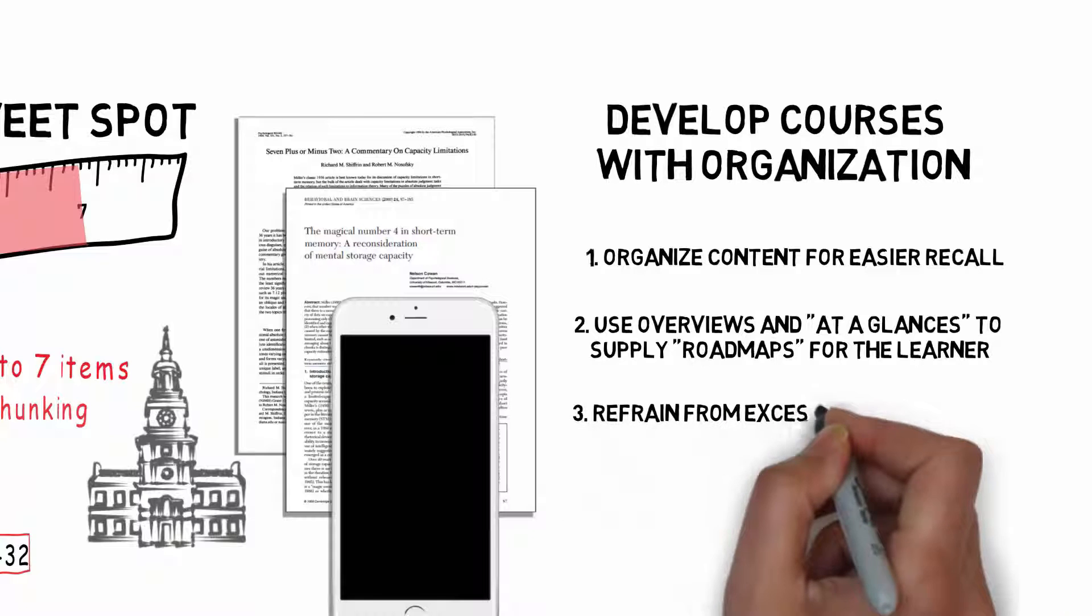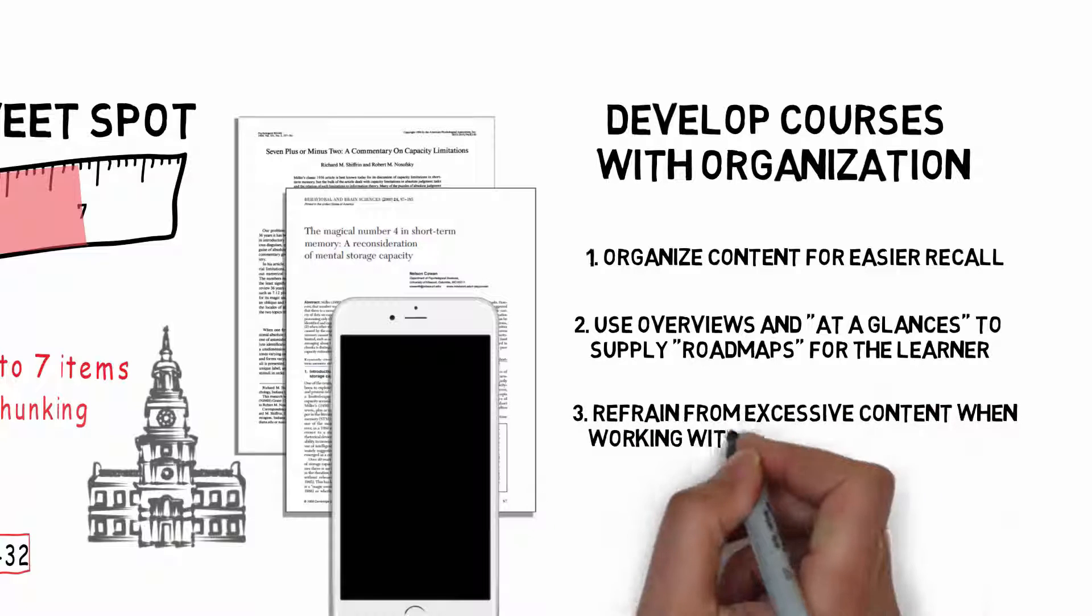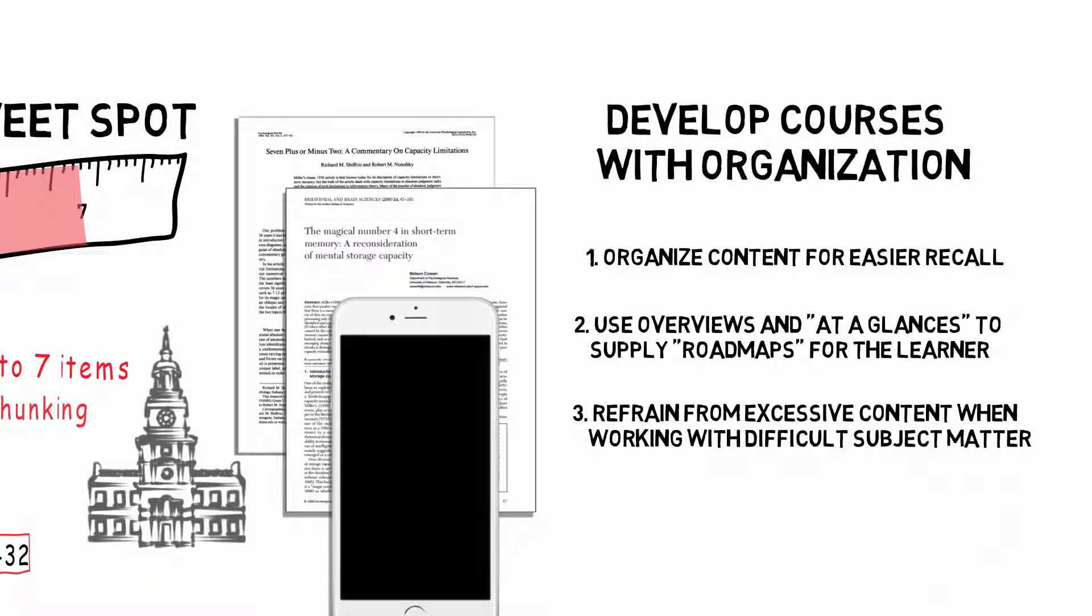Essentially, in accordance with the cognitive load theory, difficult content, such as college coursework, should refrain excessive information. Keeping the number of modules between four and seven will assist online students in understanding the content.